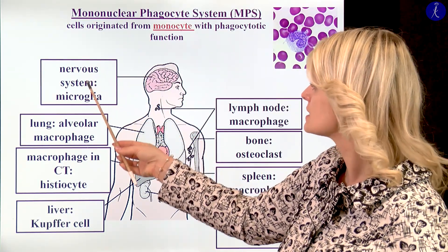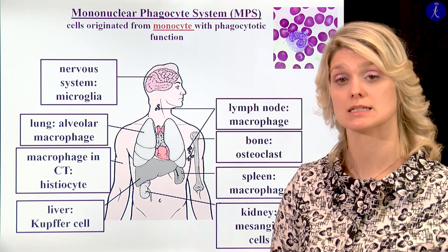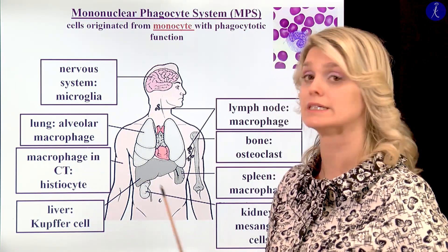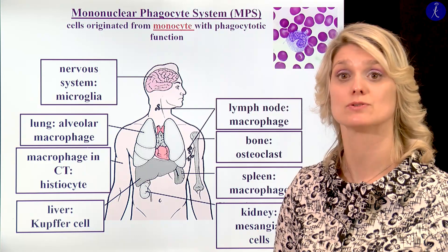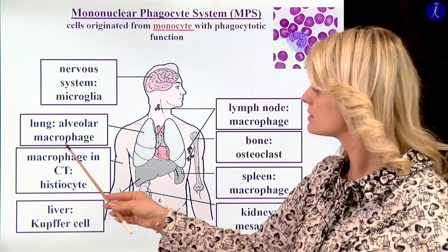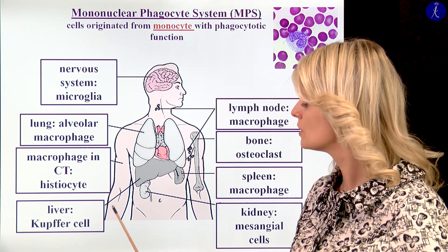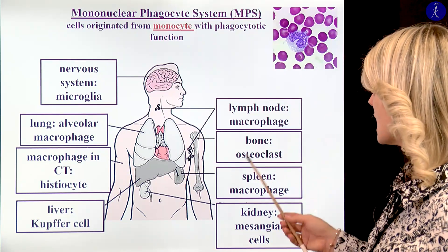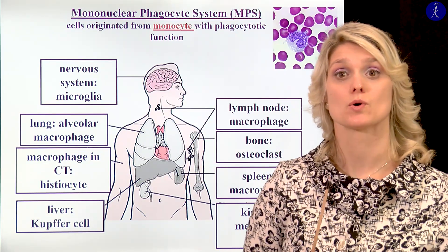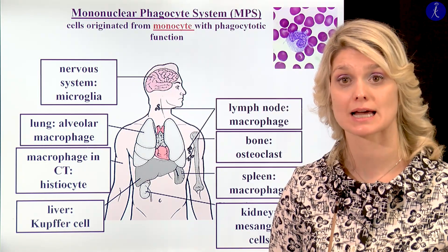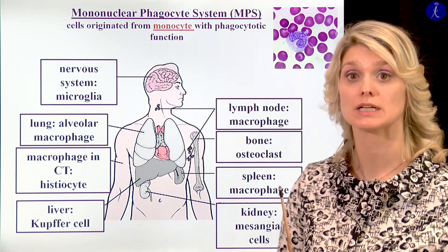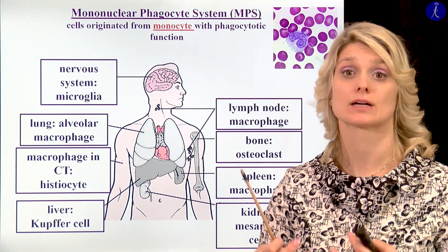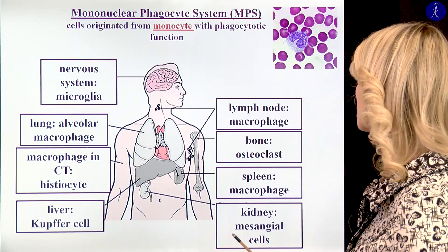The macrophage of the nervous system is called the microglial cell — we will see it in the third semester. The special macrophage of the lung is called the alveolar macrophage. The histiocyte is the macrophage of the connective tissue. The Kupffer cell is the macrophage of the liver. And in the bone, we can talk about the osteoclasts — they are also phagocytotic cells, interesting in that they have more than one nucleus. You will see these osteoclasts and chondroclasts in the cartilage and bone slides.